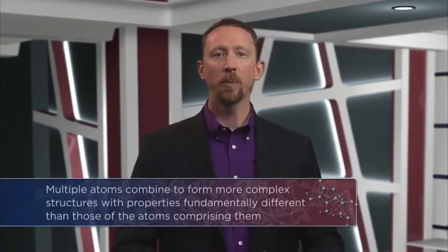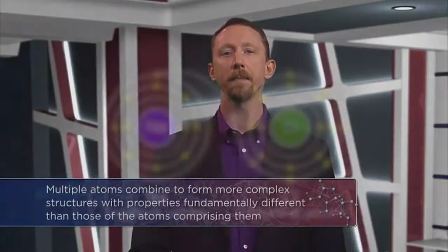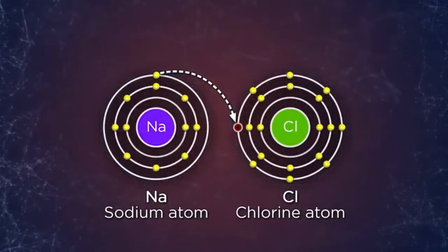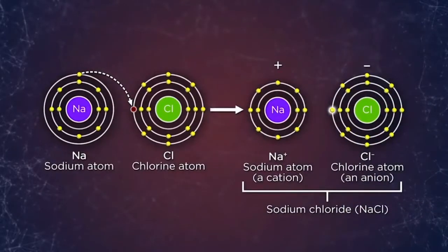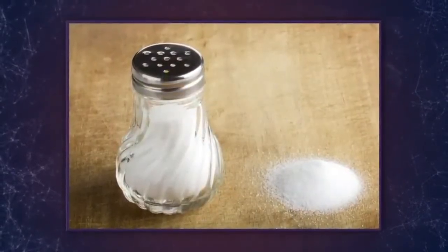The answer to that question is a phenomenon known as chemical bonding. To tell the complete story of our understanding of chemical bonding, we need to go back to the first decade of the 1800s and visit John Dalton, who asked the same question. How is it that various combinations of elements can create substances with these diverse properties? Multiple atoms combine to form more complex structures with properties fundamentally different than those of the atoms comprising them. Consider the elements sodium and chlorine — one a highly flammable metal and the other a toxic gas. Yet in combination, these elements form sodium chloride, also known as table salt, a non-toxic and even necessary part of our diet.